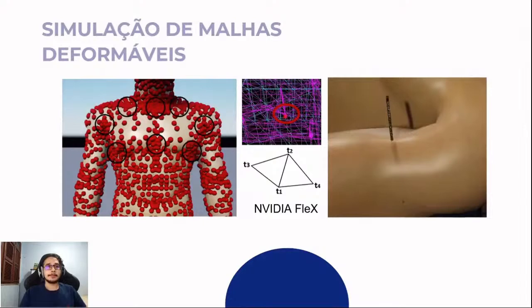Para a simulação de malhas, foram criados agrupamentos para possibilitar a geração de deformação realista da malha geométrica estática do personagem humanoide, usando uma estrutura massa-mola em nível de reflexo, quando em contato com a agulha — o objeto rígido — utilizada como método de interação.